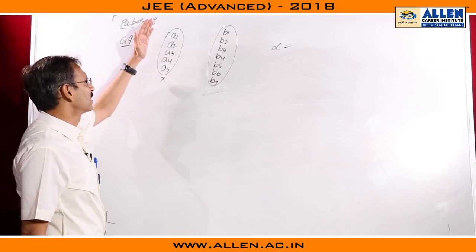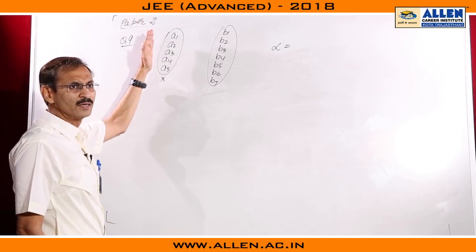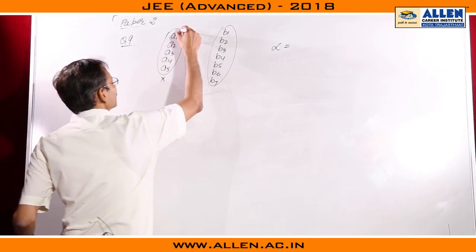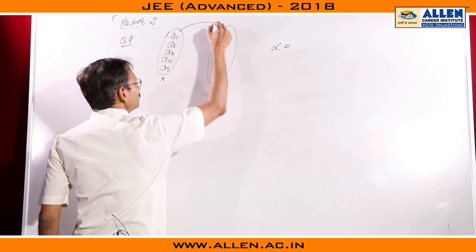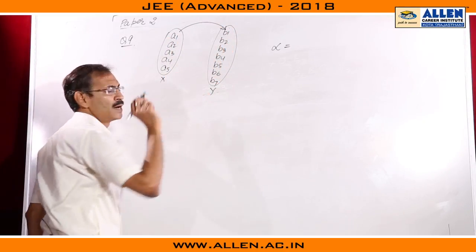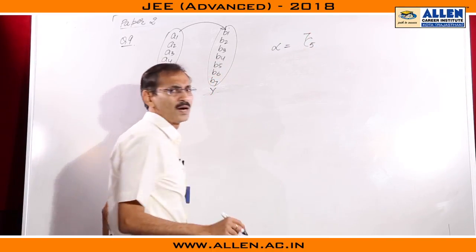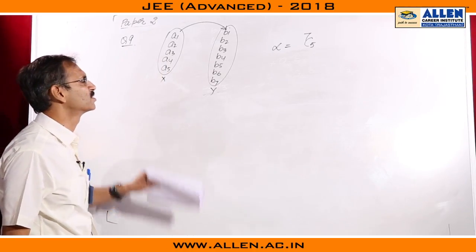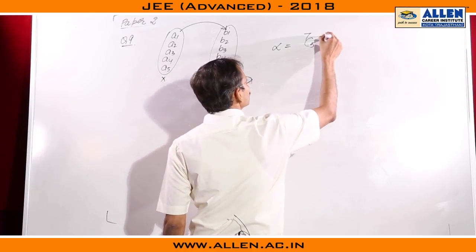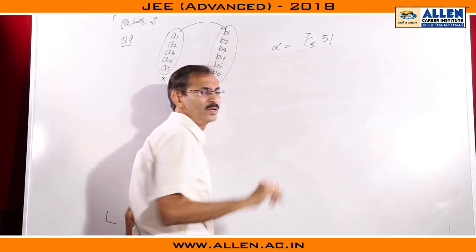1-1 function if we want to make, domain has 5 elements, so range will also have 5 elements. So from this set Y we have to utilize only 5 elements. So we select 5 elements from 7, and those 5 elements can be associated with domain's 5 elements in 5 factorial ways. This will be the value of alpha.